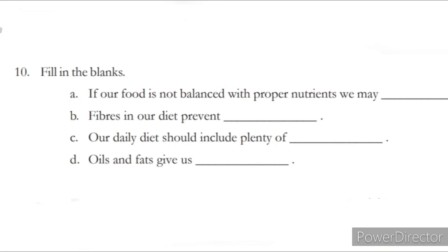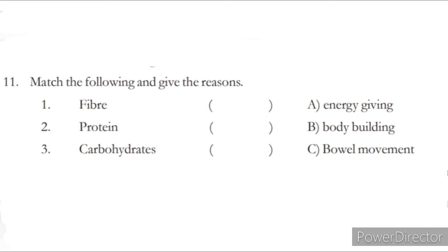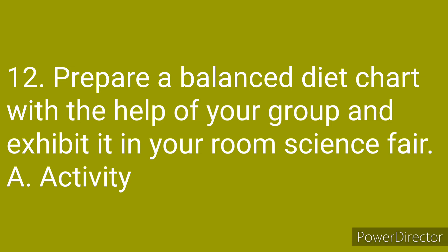Fill in the blanks: A. If our food is not balanced with proper nutrients, we may not grow. B. Fibers in our diet prevent constipation. C. Our daily diet should include plenty of water. D. Oils and fats give us energy. Match the following: Fiber — helps in bowel movement. Protein — useful for bodybuilding. Carbohydrates — energy giving food.